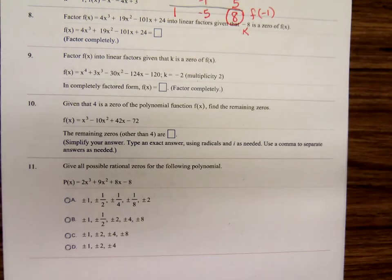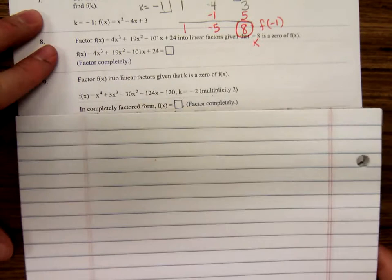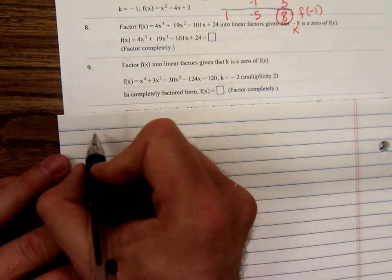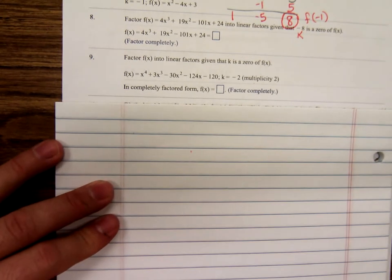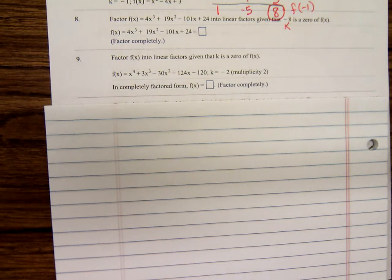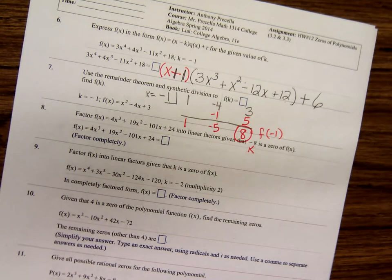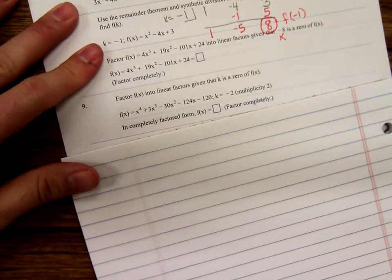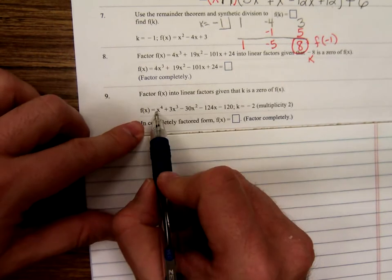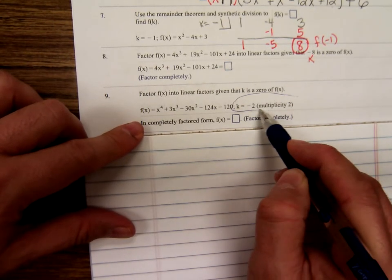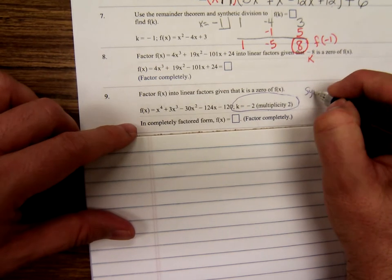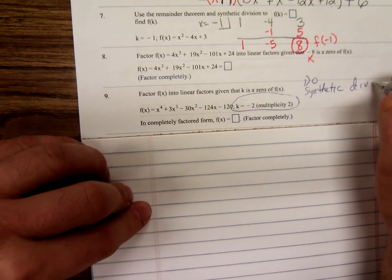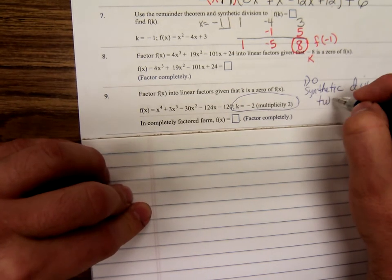And number nine is the same type of problem. Number nine, same type of problem. Let me see. Let me get a fresh sheet of paper. This is a fourth degree polynomial and it says the multiplicity is two. That means you're going to have to do synthetic division twice.